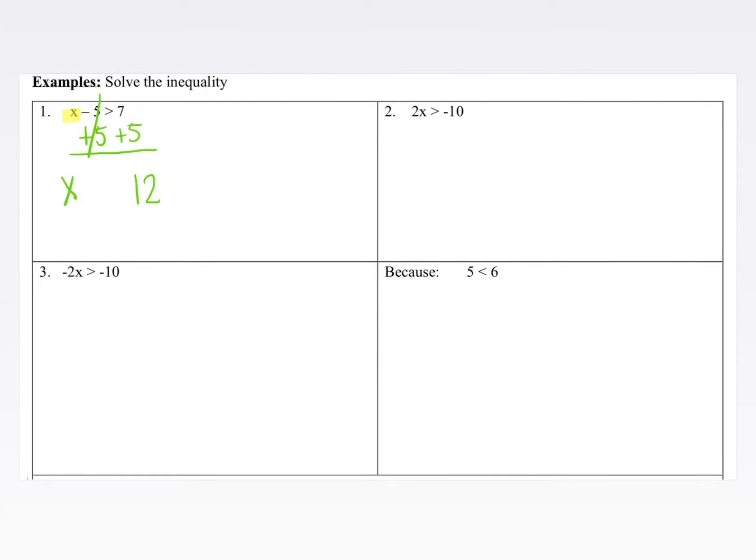Since we added the same number on both sides, the equality remains true. So this is x is greater than 12. If we were to graph this on a number line, since x is greater than 12, this is an open circle, and x is all of the values that are bigger than 12. So we're going to shade to the right.